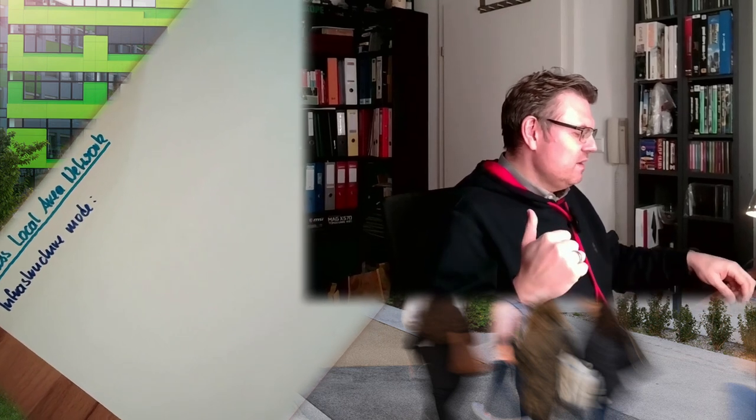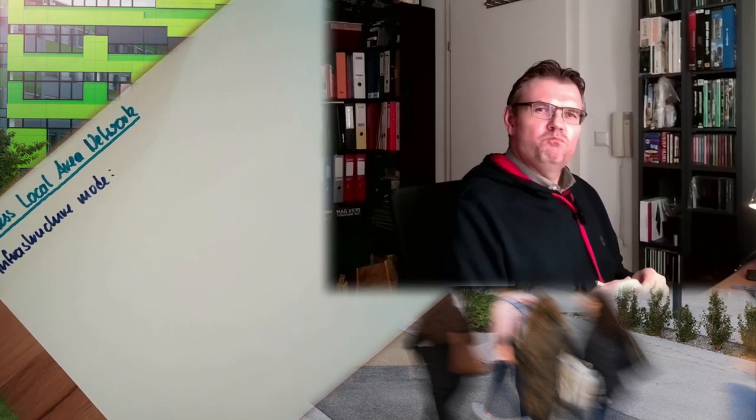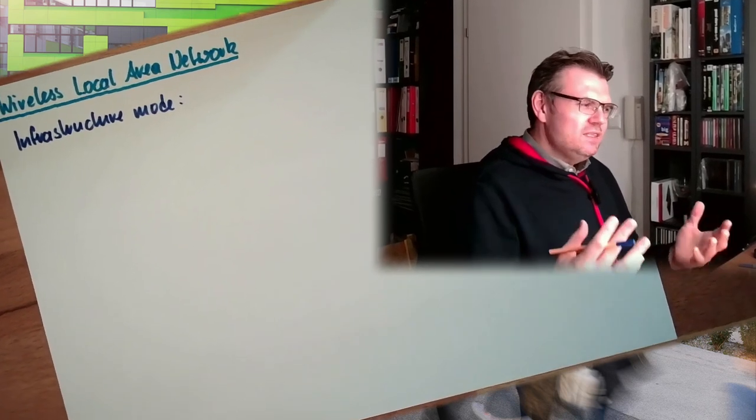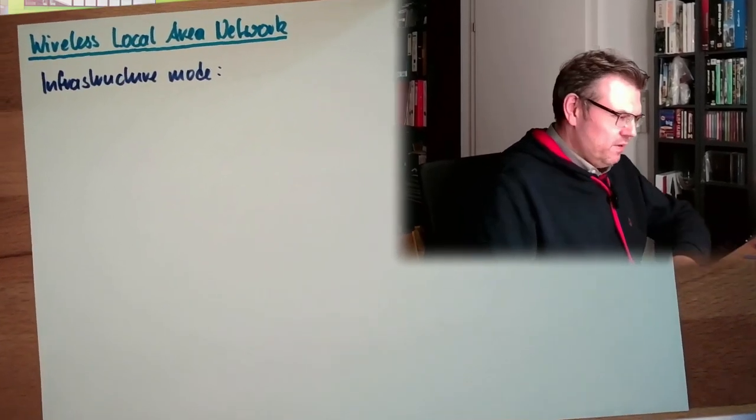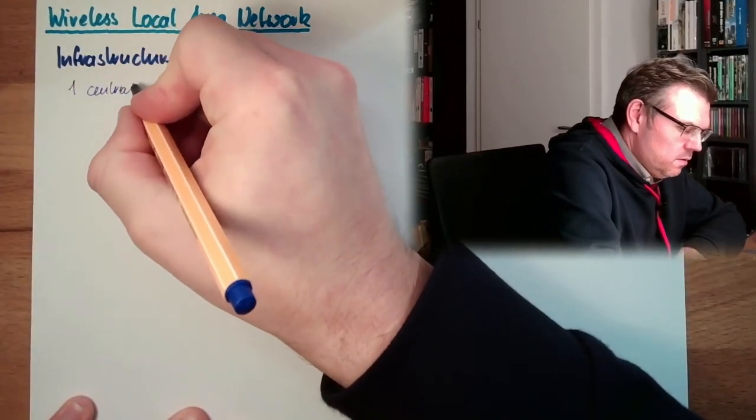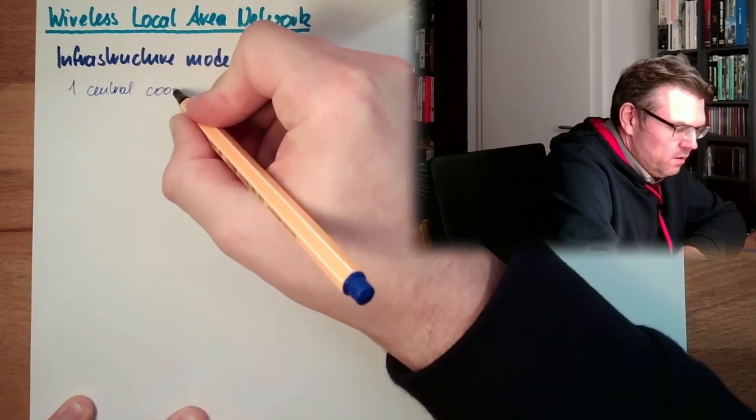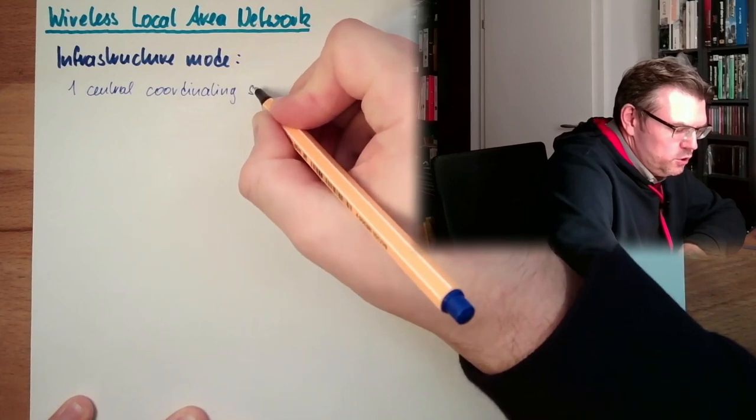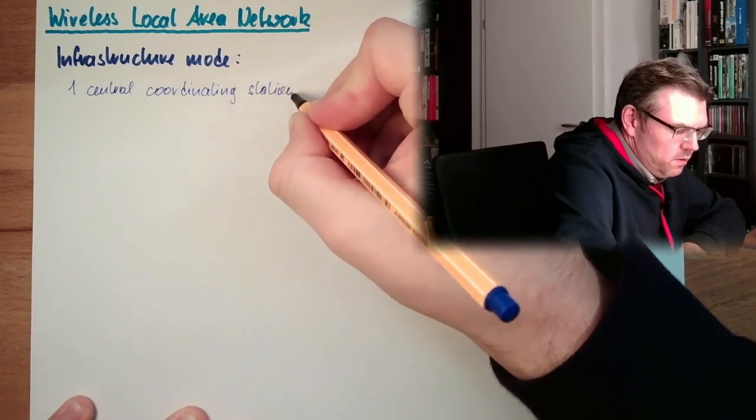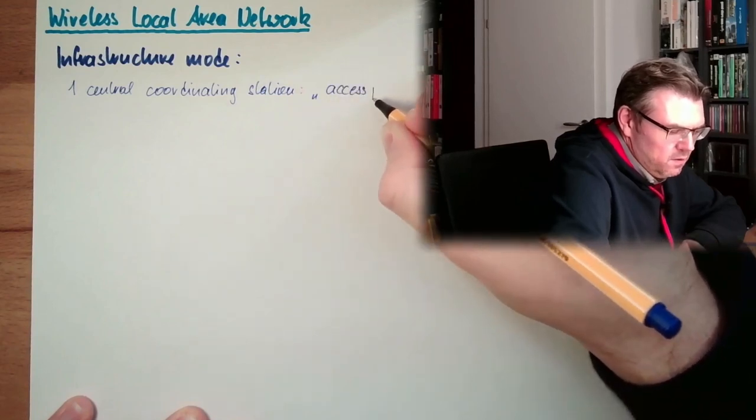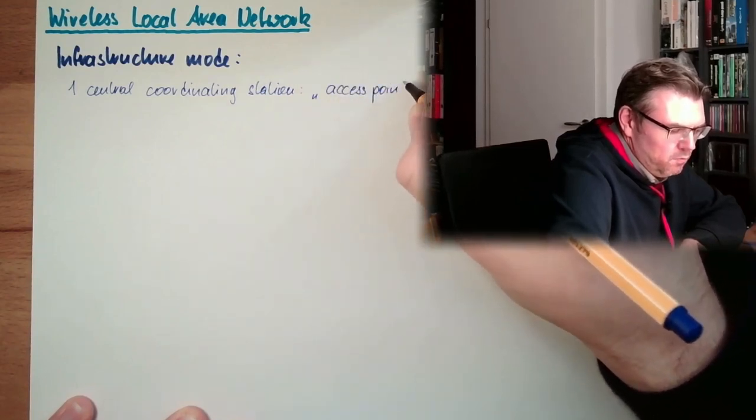In infrastructure mode, there is one defined station which has privileges, which is coordinating, one station. This is called access point. So one central coordinating station, and this is called access point.